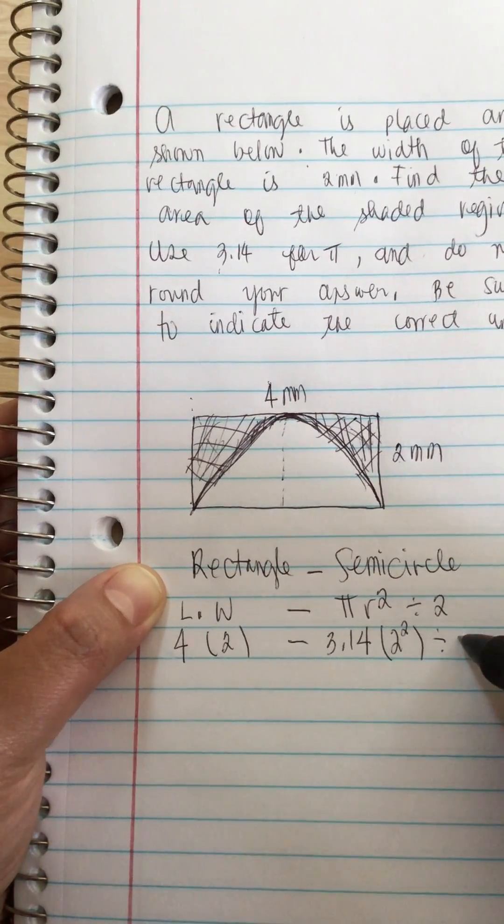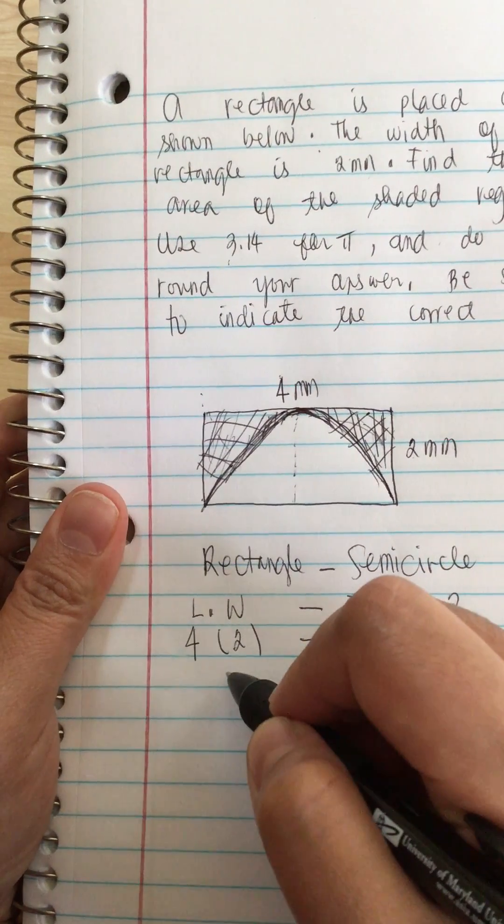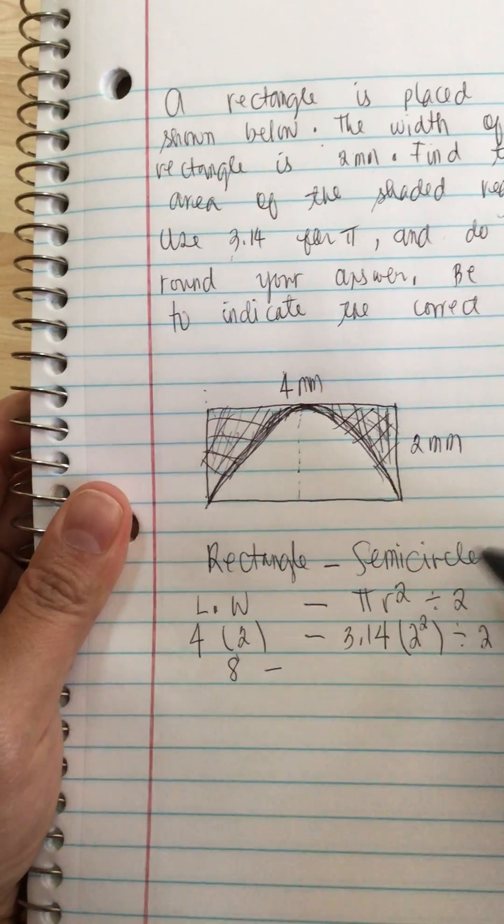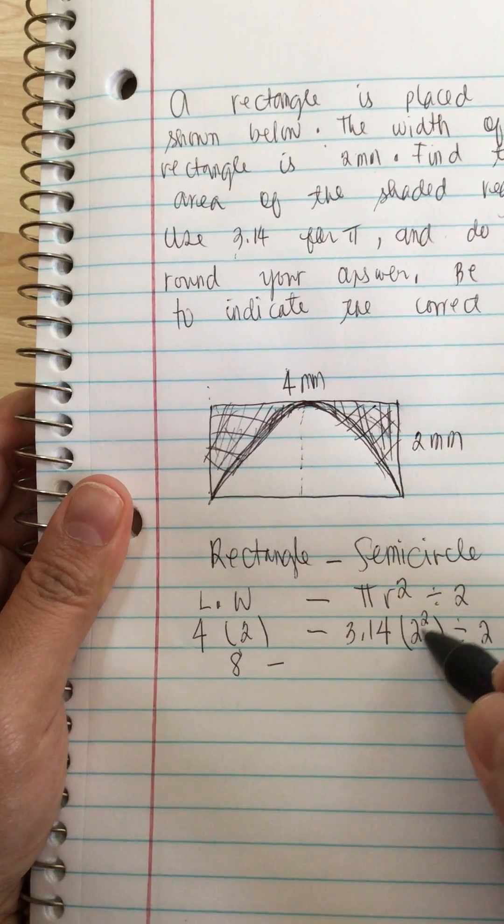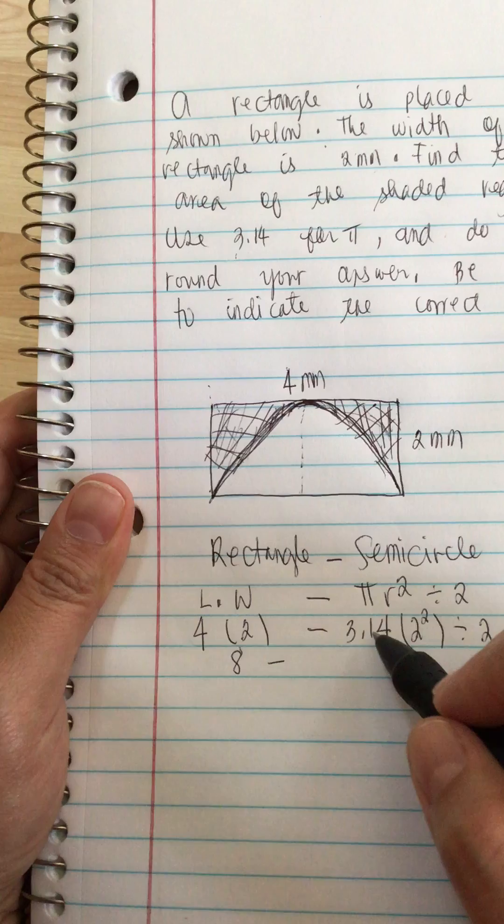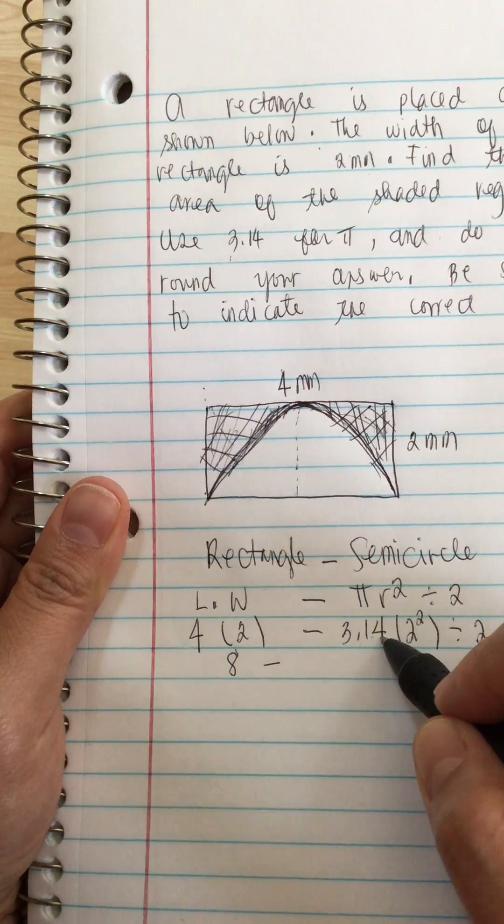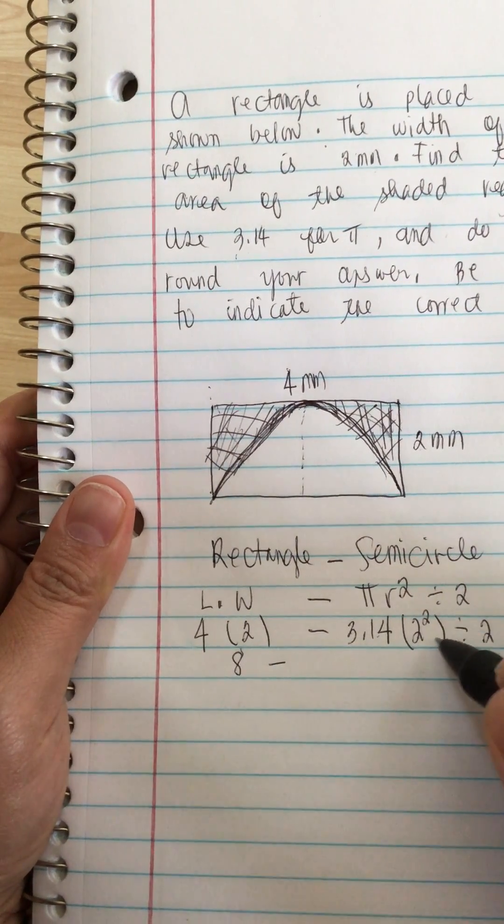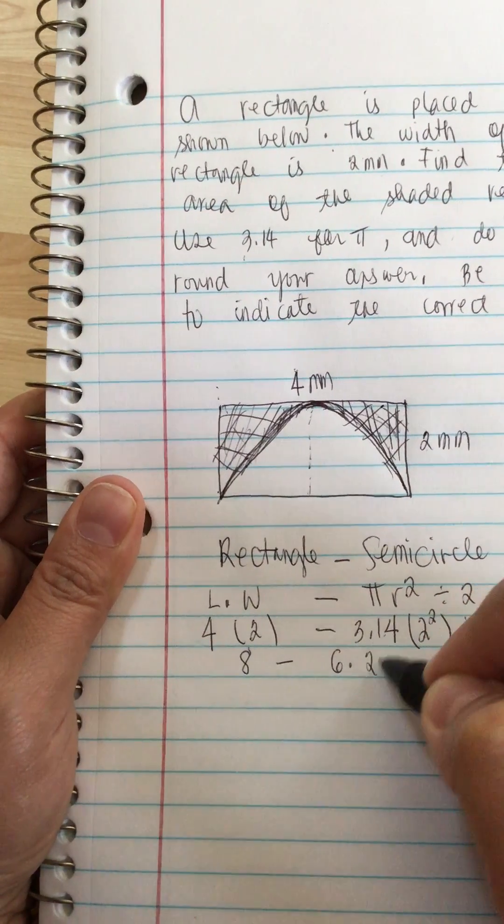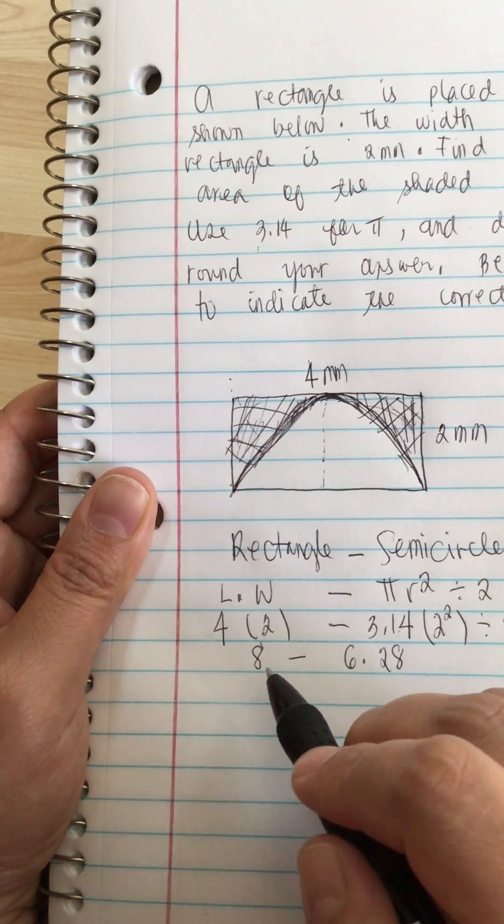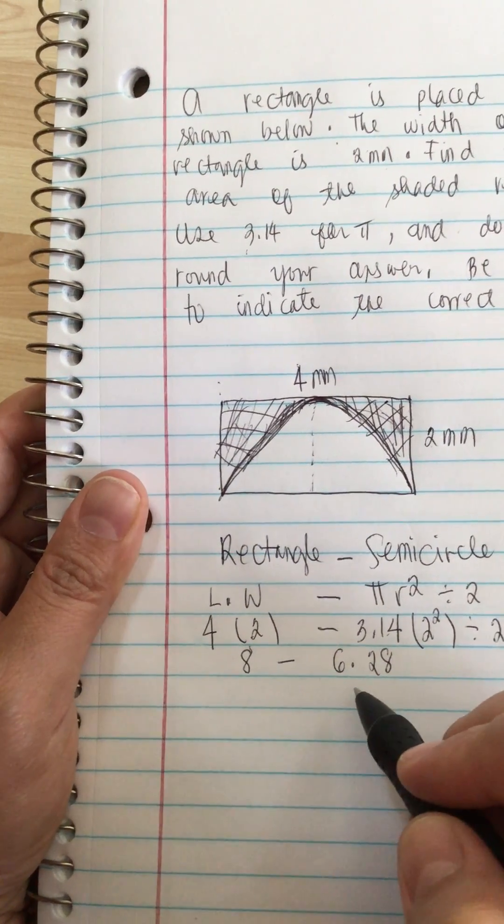Now we divide it by 2. So 4 times 2 is equal to 8 minus 2 times 2, or 2 squared is 4, times 3.14. And then we divide it by 2 and we get 6.28. So now we have 8 minus 6.28.